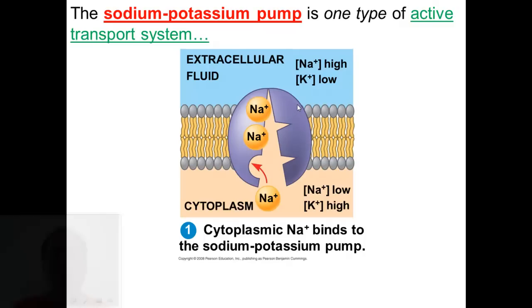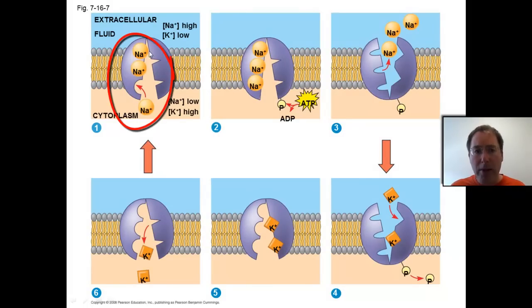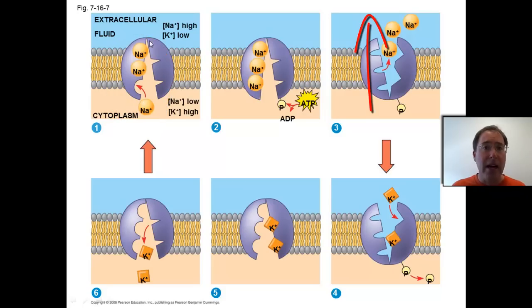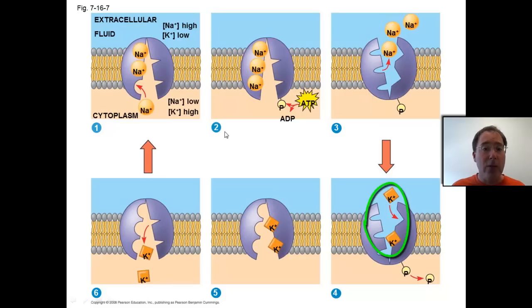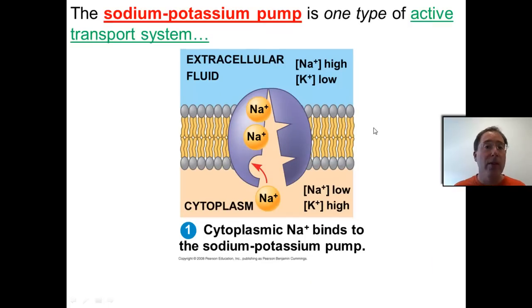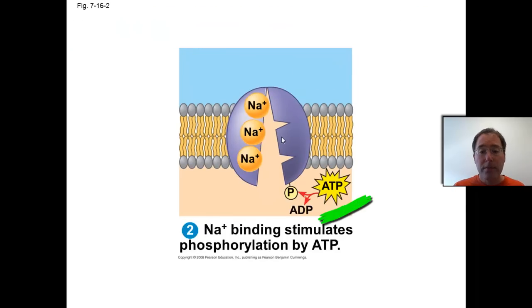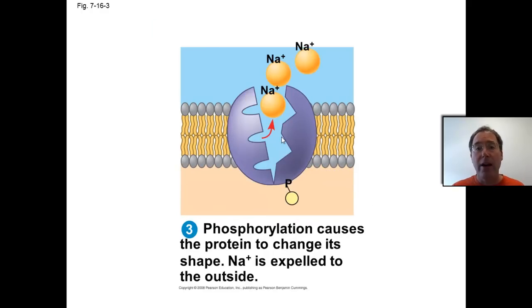The big picture is that three molecules of sodium within a neuron are going to be pumped against their concentration gradient in the presence of ATP to the outside of a neuron. ATP is used in this process. The very first step is that three cytoplasmic sodium ions bind to the sodium-potassium pump — a protein in the membrane of all neurons. This then stimulates phosphorylation of ATP to ADP, releasing energy, and the sodium ions leave and go outside of the cell.